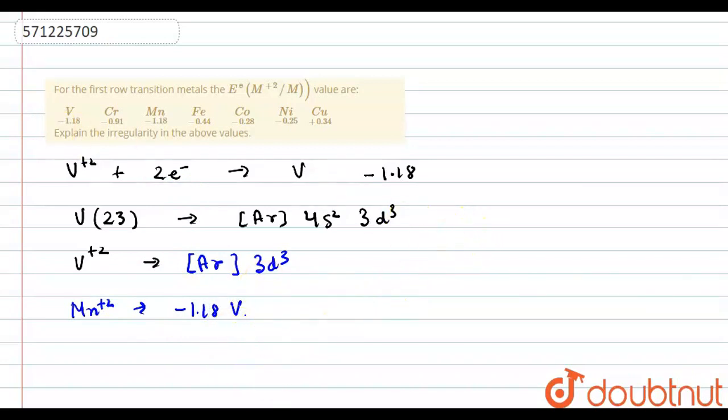So, the factors that affect the E0 values are sublimation enthalpies, that is sublimation energy, and second is electronic configuration. Since all have different sublimation enthalpies as well as electronic configurations, we see these irregularities in the above values.